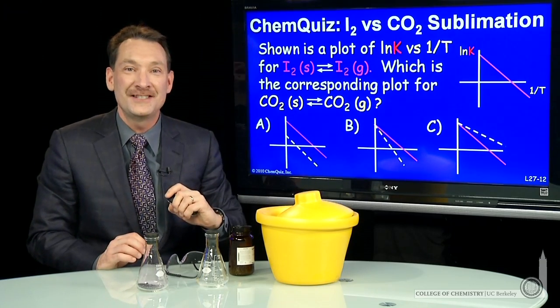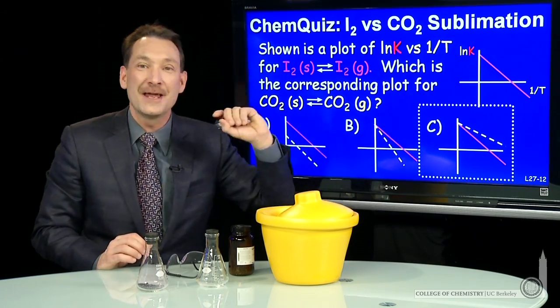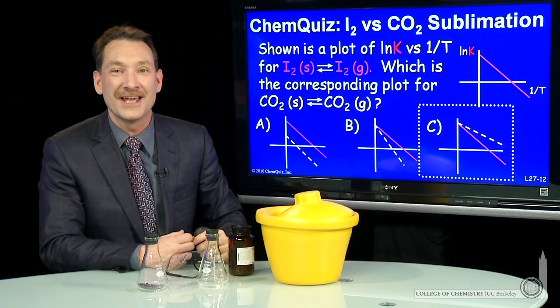In this case, the answer is C, a less negative slope, but the same intercept for a plot of lnK versus 1 over T.